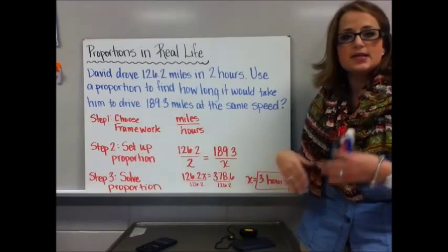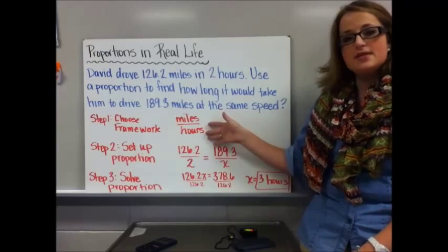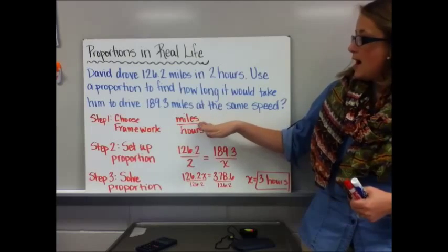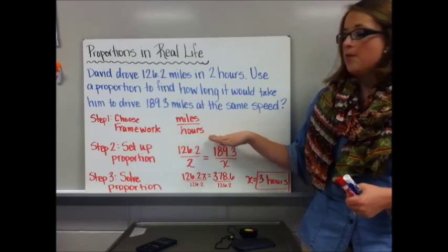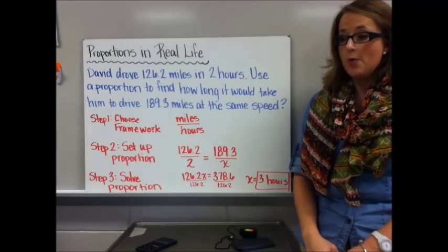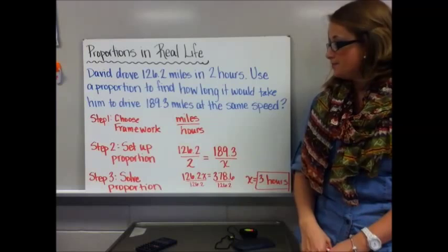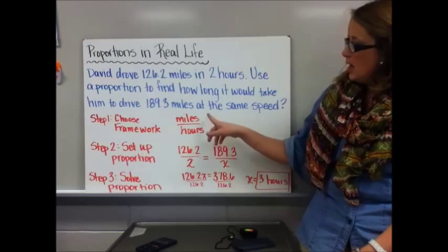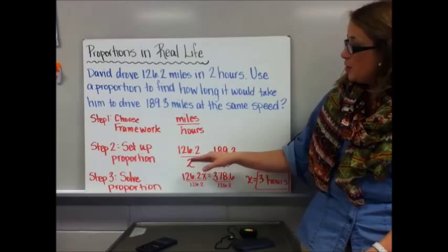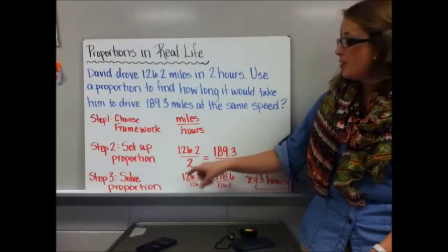The first step is to choose your framework — this is important and not something to skip. We're doing miles per hour, a standard unit rate. Whatever word comes first goes on top of the ratio, so I'll put quantities related to miles on top and hours on the bottom.